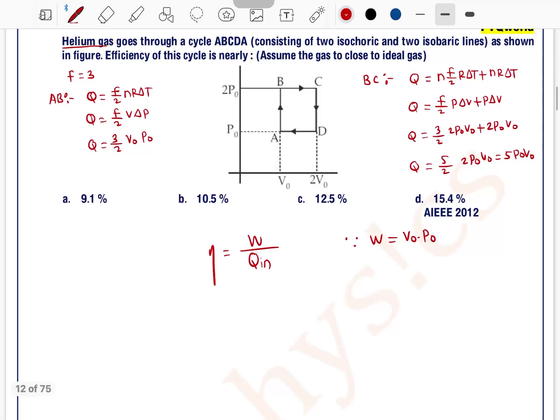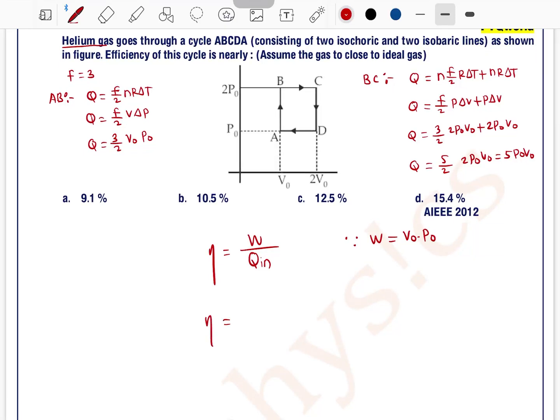So we can write efficiency is equal to P₀V₀ divided by Q_in, that is 3 by 2 P₀V₀ plus 5P₀V₀. P₀V₀ cancels out, 1 divided by 3 by 2 plus 5, which is equal to 2 divided by 13.